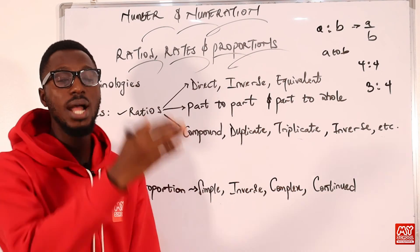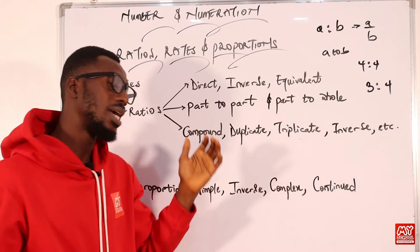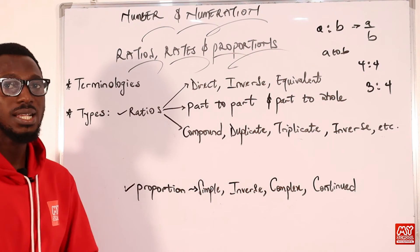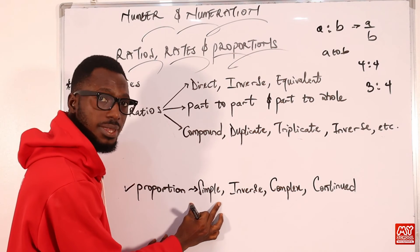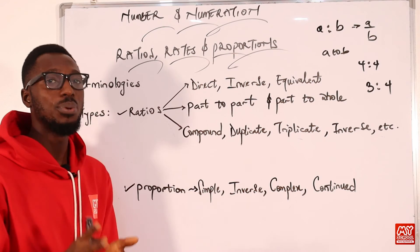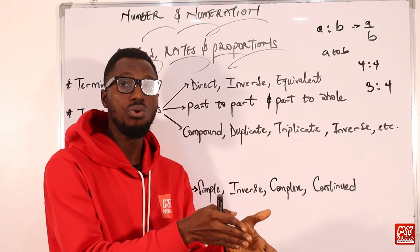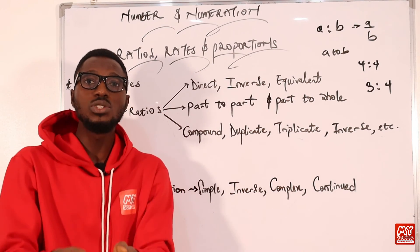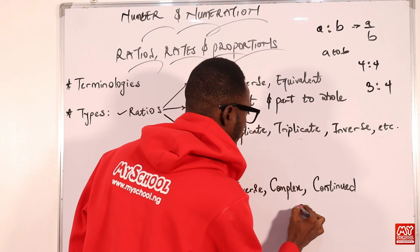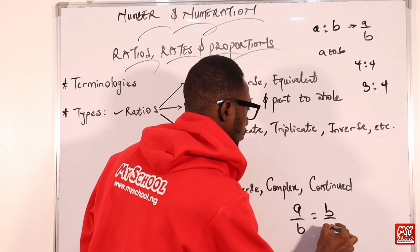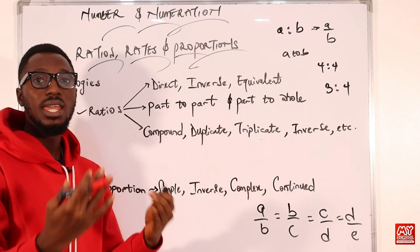When it comes to inverse proportion, as a particular quantity is increasing, the other quantity is going down — and decreasing on one side means increasing on the other. Complex proportion means you have a question that combines both direct and inverse together. Continued proportion means the relationship the first ratio has with the next is the same relationship the next has with the third, and so on.